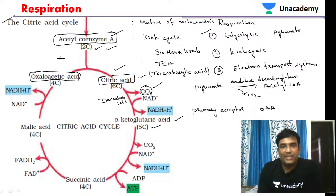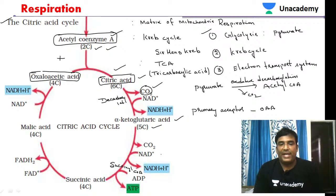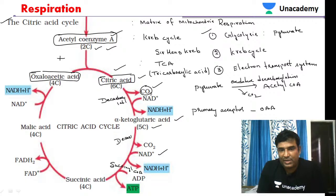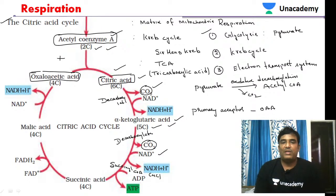Alpha-ketoglutaric acid is further reduced to succinyl-CoA, a four-carbon compound. Again, NAD+ is reduced to NADH + H+. This step is also a decarboxylation reaction — there is liberation of carbon dioxide, because alpha-ketoglutaric acid is a five-carbon compound and succinyl-CoA is a four-carbon compound. So there is a loss of one carbon dioxide.